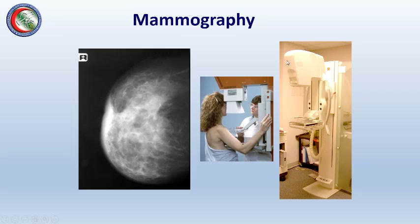This is a mammography machine with the same setup as an X-ray machine — a tube, a detector, and a compression device for the breast. The modifications include using a very small dose of X-ray and high resolution quality because we are imaging a small body part with fine detail. The breast has a lot of fat, so we use a lower dose than for imaging the abdomen or chest.